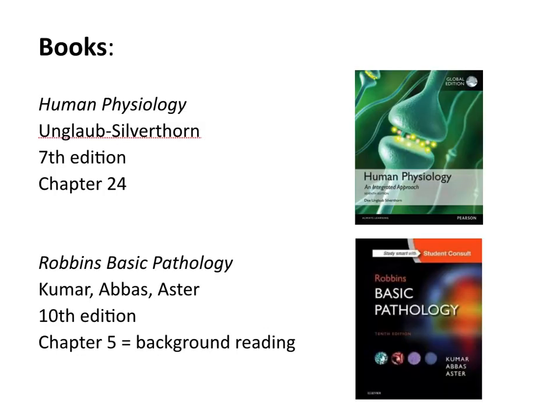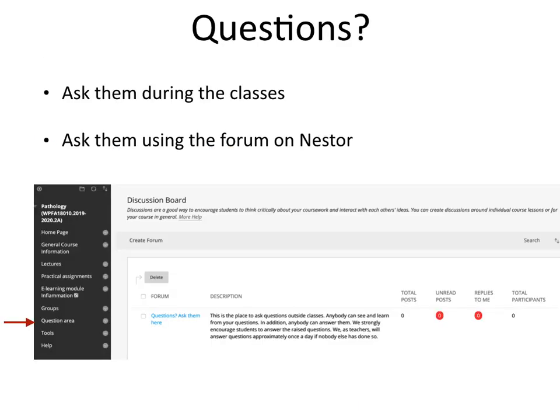What can you use to study this topic? Well, we have two books. We have Human Physiology, and then you need to study chapter 24. And we have Robbins Basic Pathology, and then you can read chapter 5 as background reading. If you have questions you can't ask them anymore during the class, but we have made an online forum on Nestor that you can use to ask your questions. This can be found under the pathology course on the left by clicking on 'question area,' as you can see here.